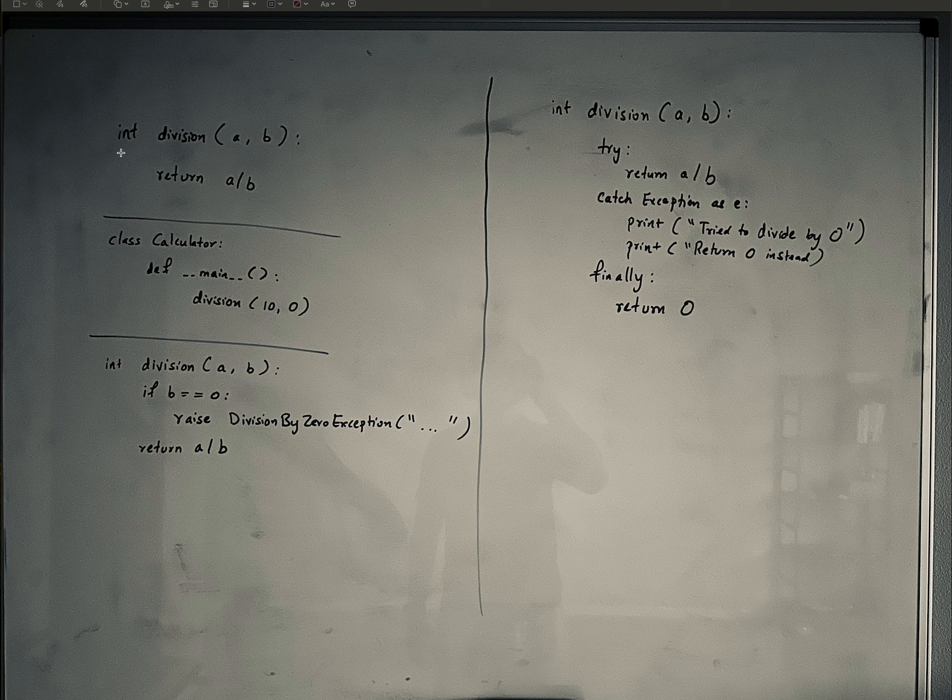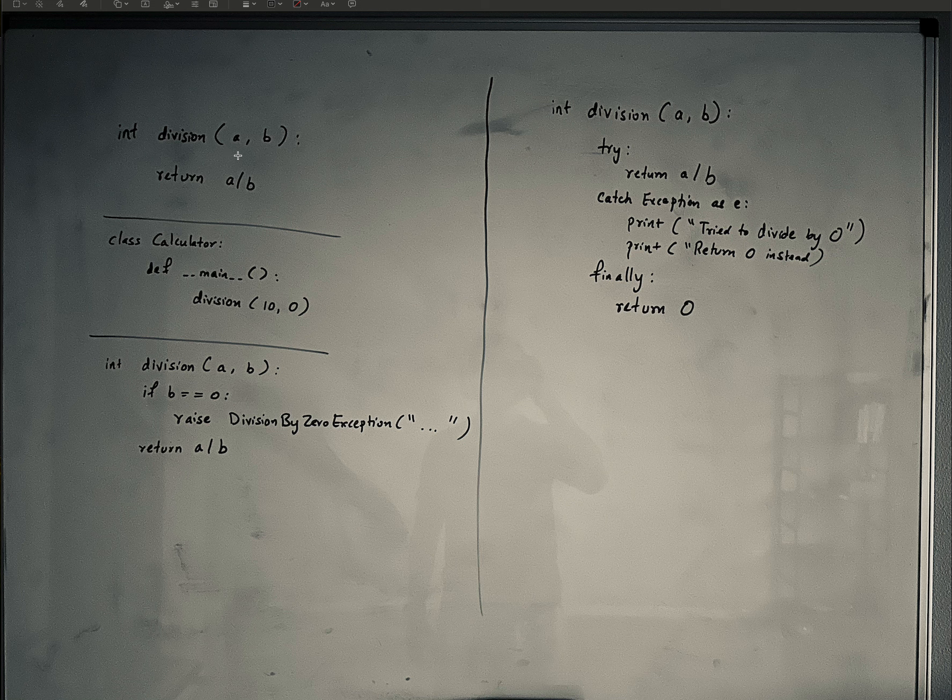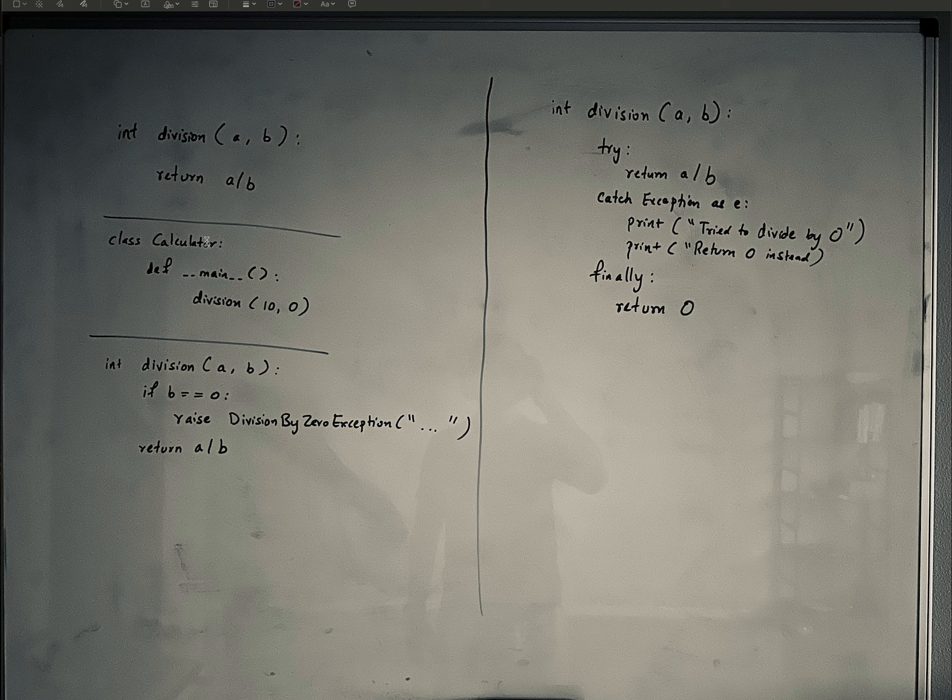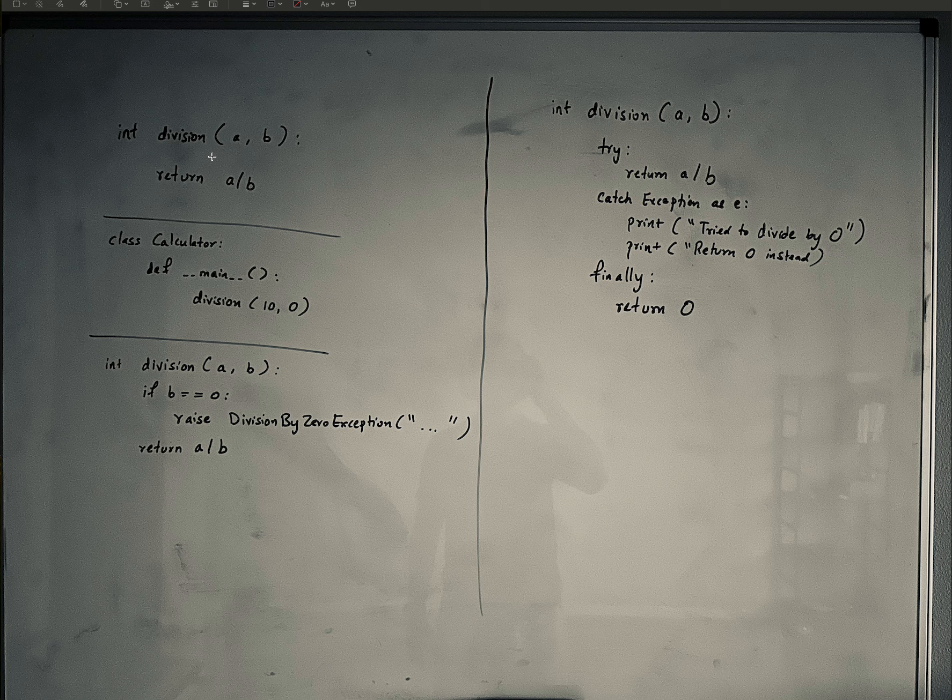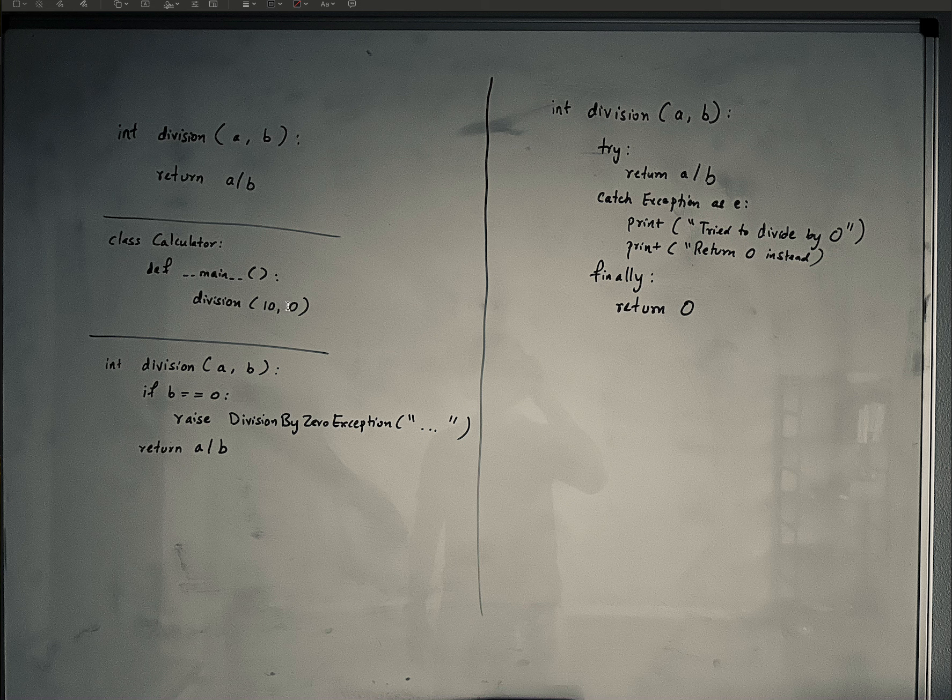So for example, given that you have a division function that divides two numbers a and b together and returns a divided by b. Say you have your calculator class that has a main function. This main function calls this division function that divides a and b. And now, if you pass in two integers, say 10 and 0.